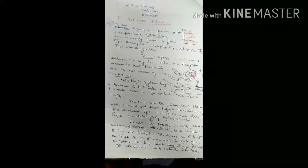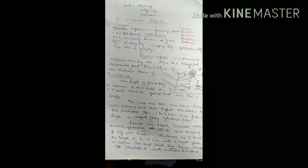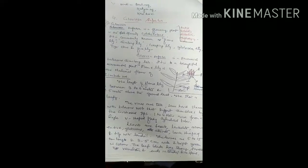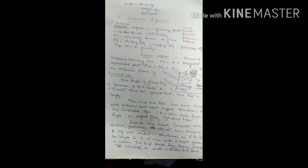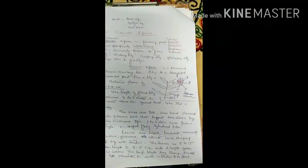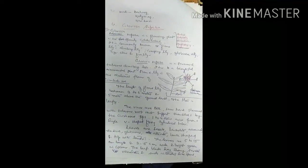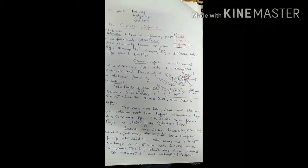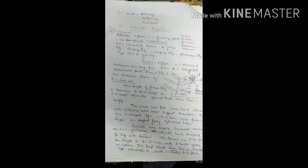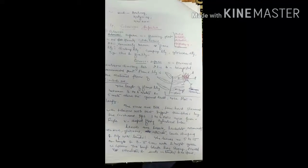Gloriosa Superba is a perennial tuberous climbing herb. It is a beautiful ornamental plant. Flame Lily is the national flower of Zimbabwe. The length of the Flame Lily is between 3 to 6 meters and 1.5 meters above the ground.